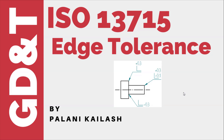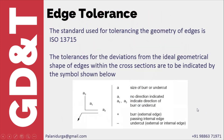In this video we are going to discuss what will happen if we don't give any chamfer or fillet radius to sharp edges. For this we have a standard in ISO called ISO 13715. In most drawings you would have seen a symbol like this. In this video you will get an understanding of what this symbol means and how to interpret it when it appears in a drawing.